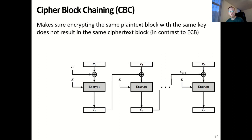The second mode, which is very popular, is called cipher block chaining or CBC. Cipher block chaining ensures that the same plaintext block with the same key does not necessarily result in the same ciphertext block. We use an initialization vector or nonce, referred to as IV, which can be randomly determined and shared between the sender and the receiver using, for example, electronic codebook mode. This IV is the same size as a plaintext block and is combined with the first block of the message using an exclusive OR operation.